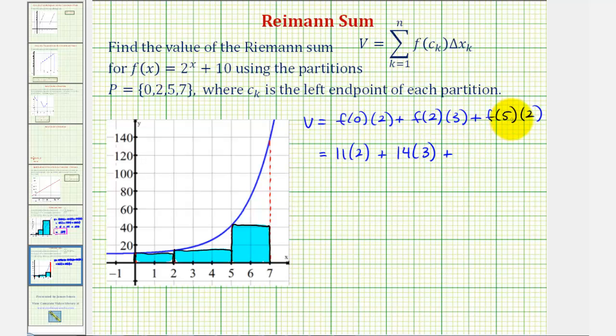plus f(5) would be 2^5, that's 32, plus 10, that's 42, times 2. So we have 22 plus 42 plus 84. The value of this Riemann sum is 148.